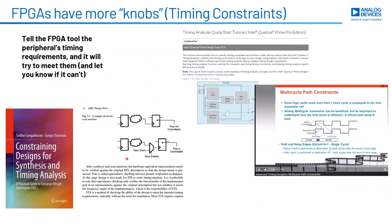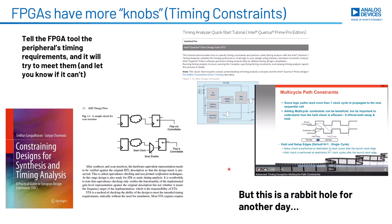In FPGA land, you've got a finer degree of control in the form of timing constraints — a language or set of requirements that tell the FPGA tool, whether it's Quartus, Vivado, or another vendor's tools, what the peripheral's timing requirements are, and it will try like crazy to meet those requirements and let you know if it can't. There's a wonderful book on the subject filled with diagrams of flip-flop chains through logic with delays, multi-cycle path constraints, and all kinds of situations. It's a pretty deep subject — a rabbit hole for another day.